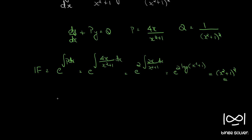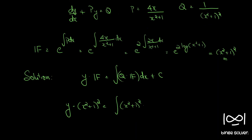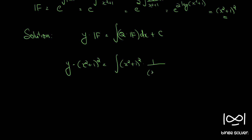So we have our integrating factor. The solution for such a linear differential equation is given by y times the integrating factor equals the integral of Q times the integrating factor dx plus C. So y·(x²+1)² equals the integral of (x²+1)² times 1/(x²+1)² dx. These two cancel, giving the integral of dx, which is x plus C.